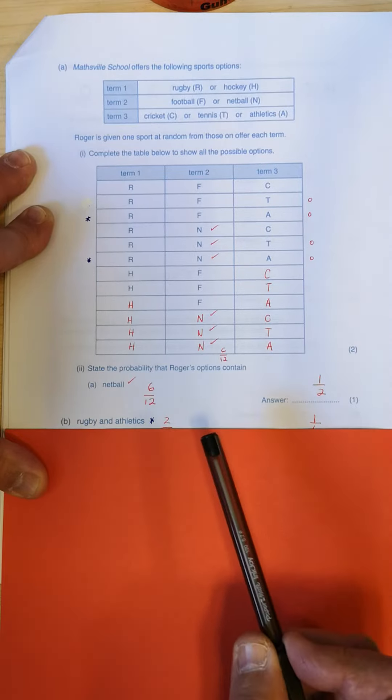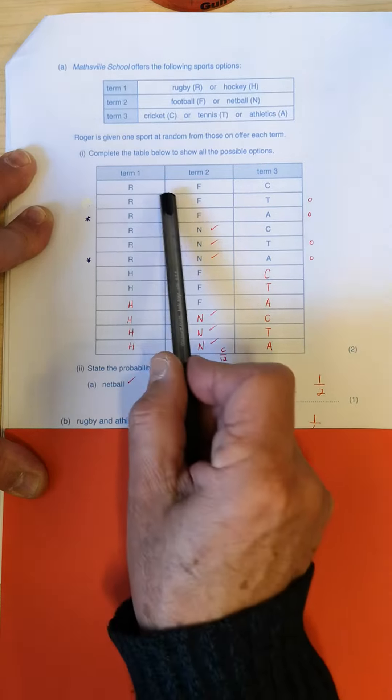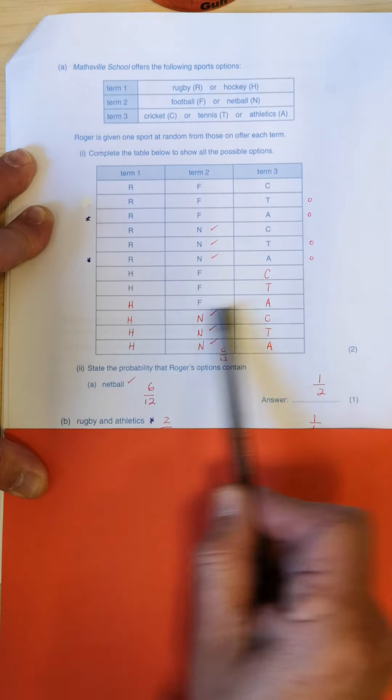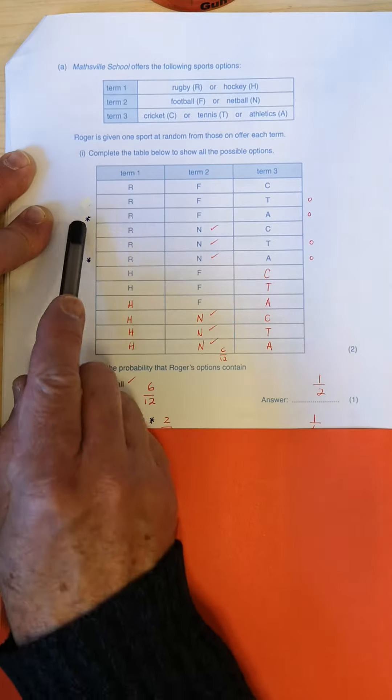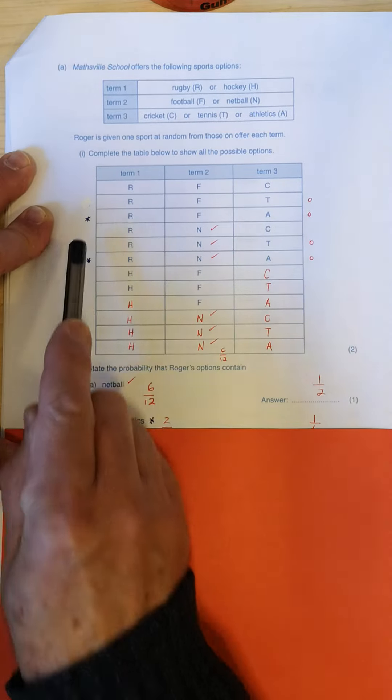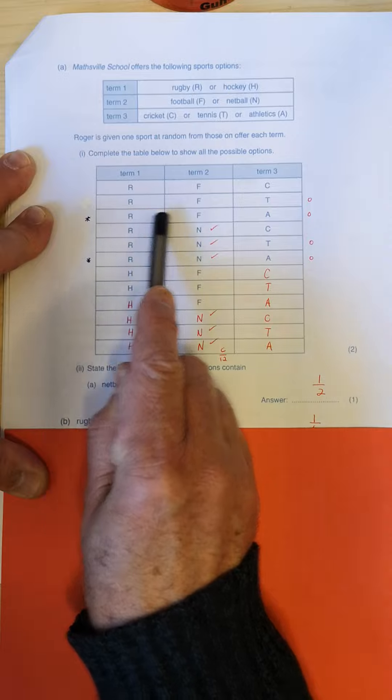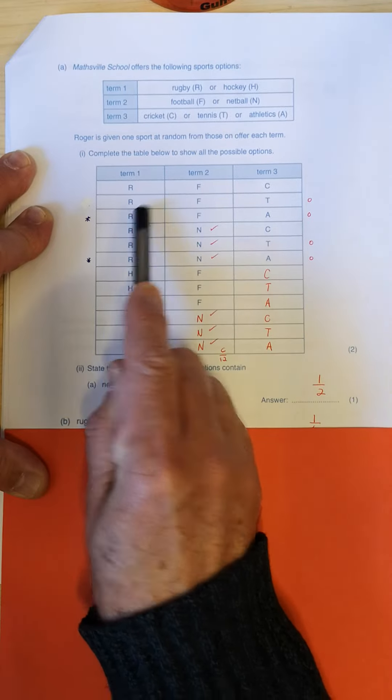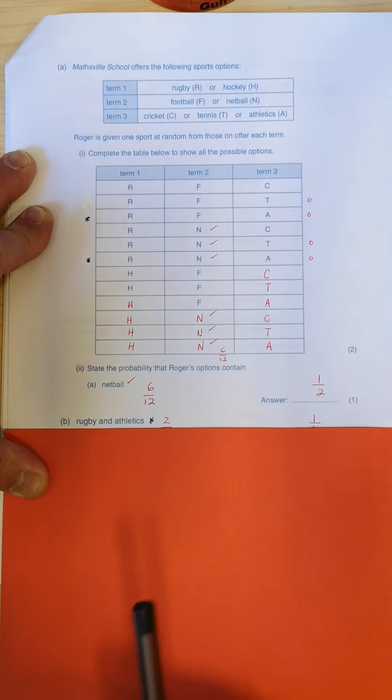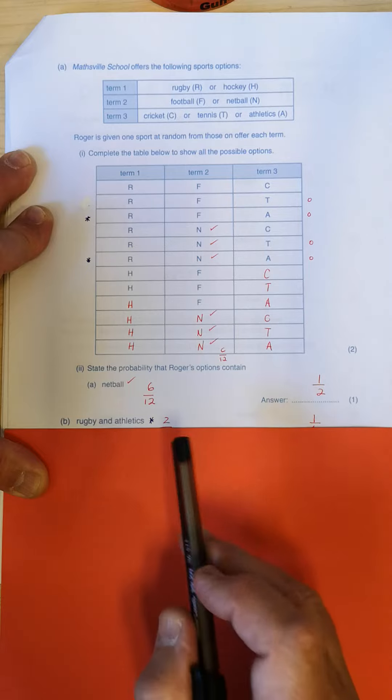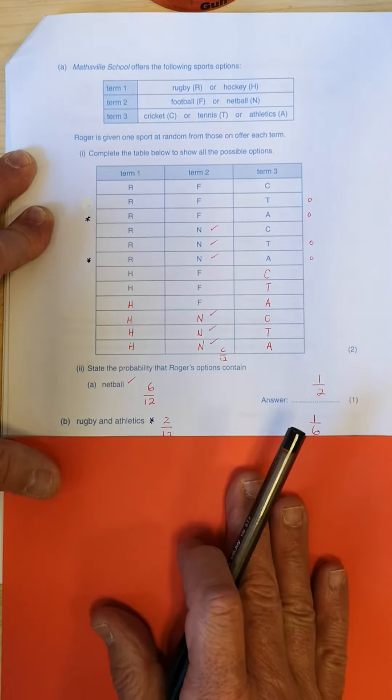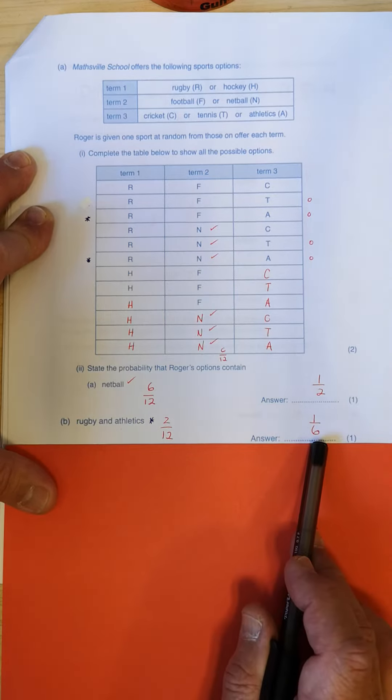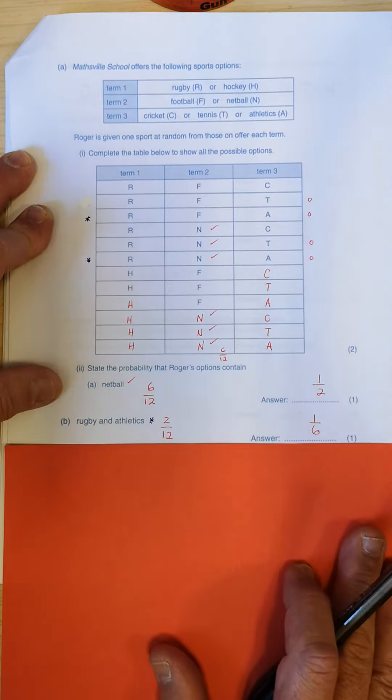state the probability that Roger's options contain rugby and athletics. Now, what are we going to look for? The initial R and A. Look along there and see if you can see any combination where rugby and athletics features. Now, what I've done here is I've taken an asterisk and I've put it there alongside where I found the only two combinations that had an R and an A in it. Okay, so again, it was one option, two options out of twelve.